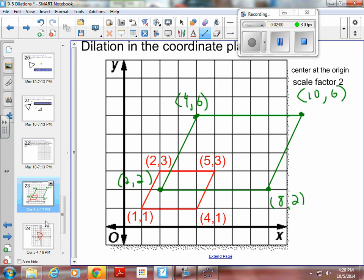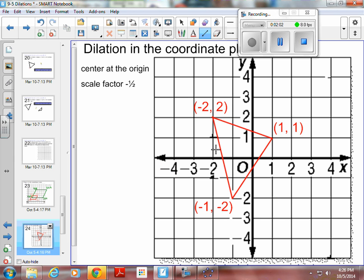Let's do one more centered at the origin. So here's one. Again, I'm centered at the origin but my scale factor is a negative one-half. So I'm going to take each point and I'm going to multiply by a negative one-half.